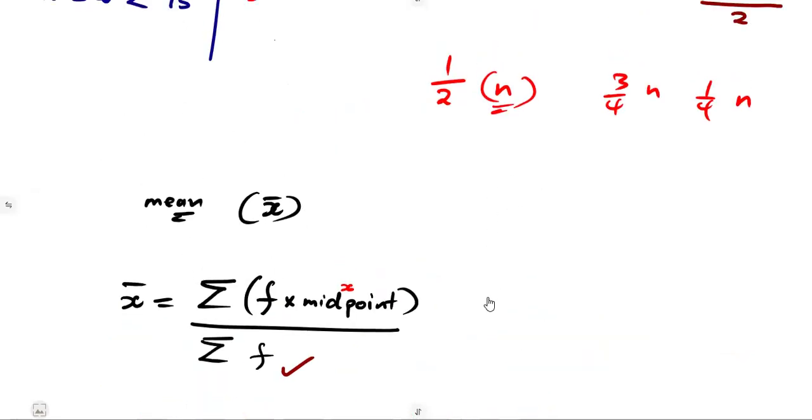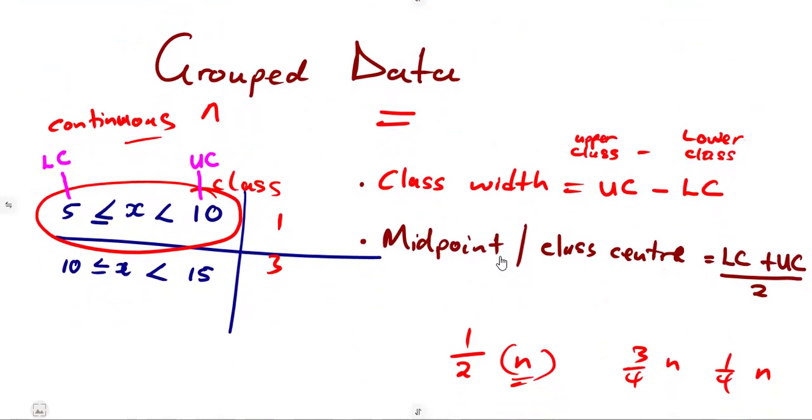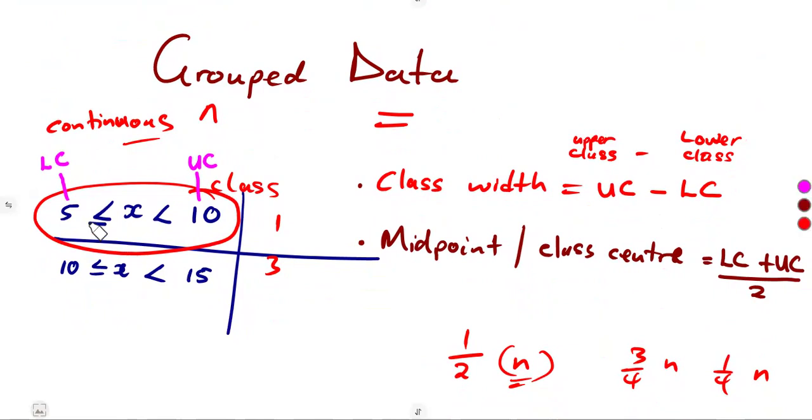What you need to understand as basics of the histogram is that the information used to represent the histogram is being taken from grouped information. When we're dealing with grouped information, we're representing this information in form of classes from a certain part to a certain part. That's the class interval.